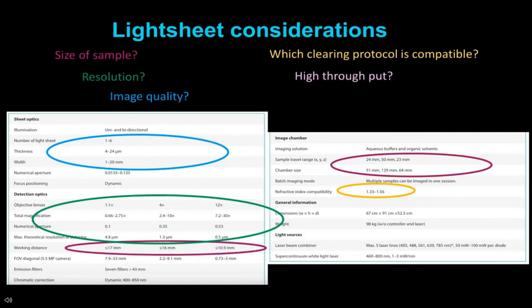Then, how much throughput can you get? This depends on how much you can fit into the microscope, but also in terms of the software—whether you can set up the microscope to acquire several samples in one session. So this is more automated.